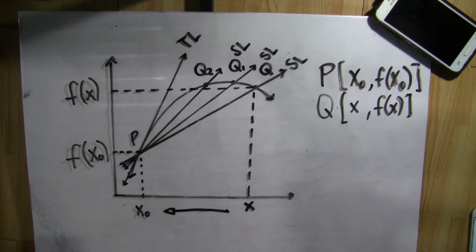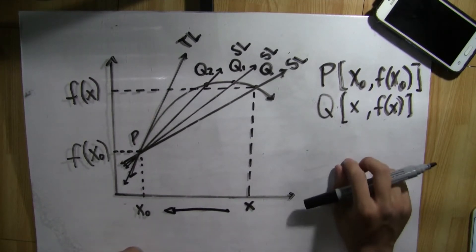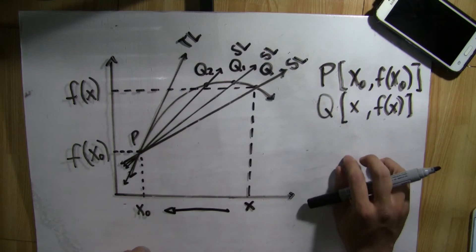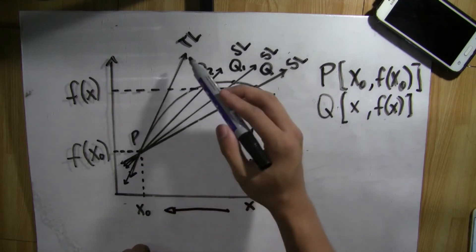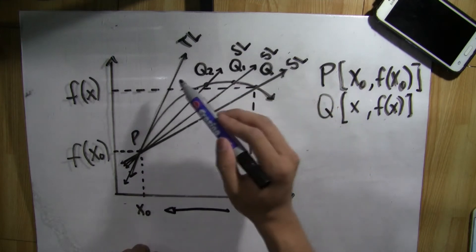Now here is the process of getting the equation of a tangent line in point-slope form with the use of a secant line. To get the equation of the tangent line, we first need to understand the concept that the tangent line is the limiting position of all the secant lines on the graph.